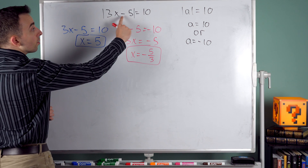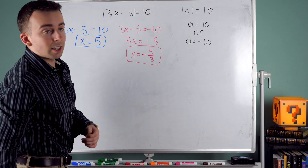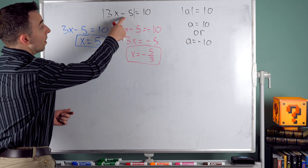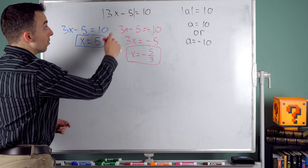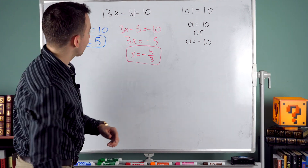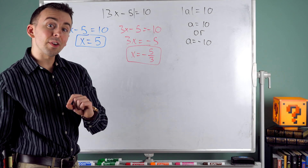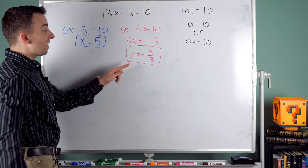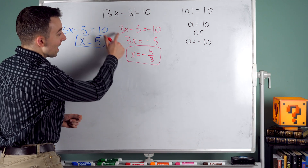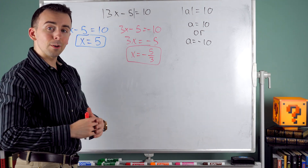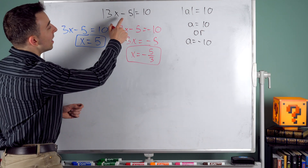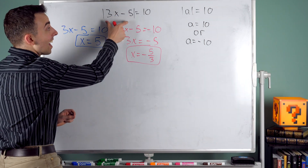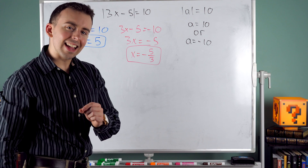Both values of x make the equation true, which we can verify by plugging them in. If x equals 5: 3 times 5 is 15, minus 5 is 10, and the absolute value of 10 is 10. If x equals negative 5 thirds: 3 times negative 5 thirds — the threes cancel — giving negative 5, subtract 5 is negative 10, and the absolute value of negative 10 is 10.